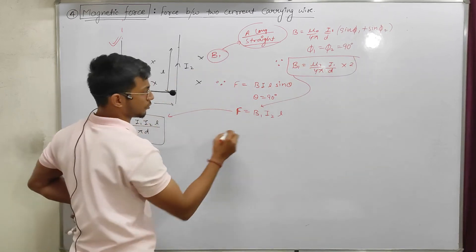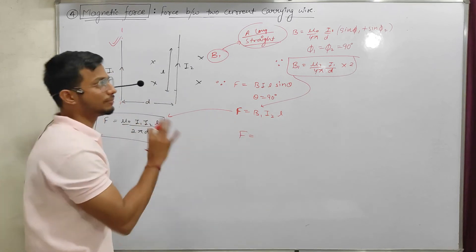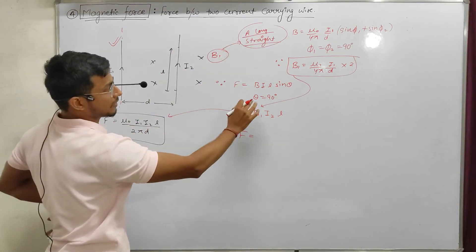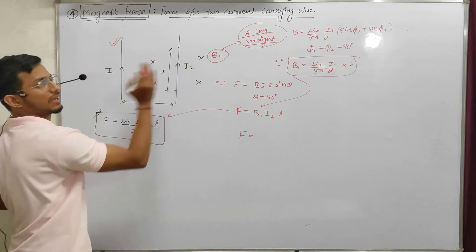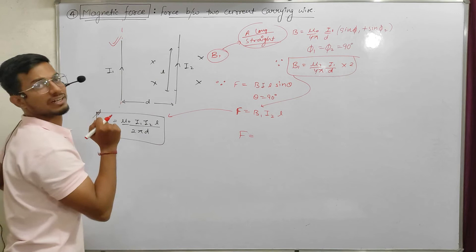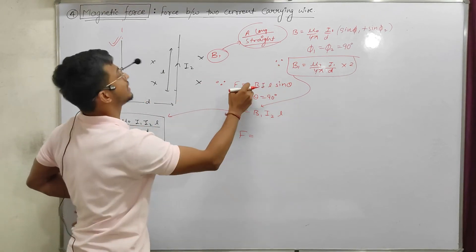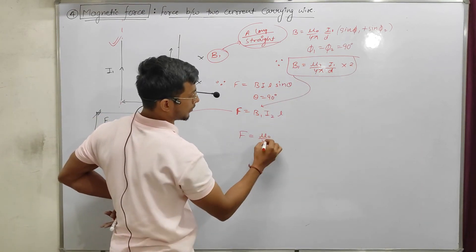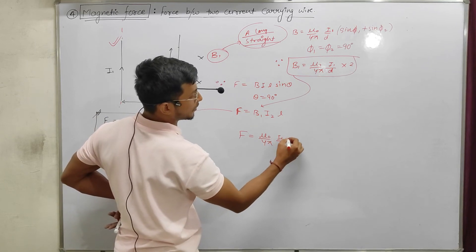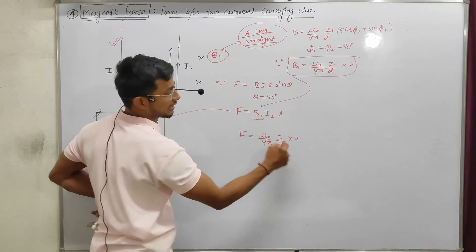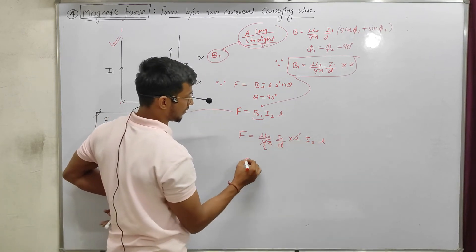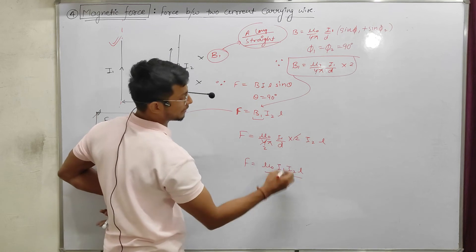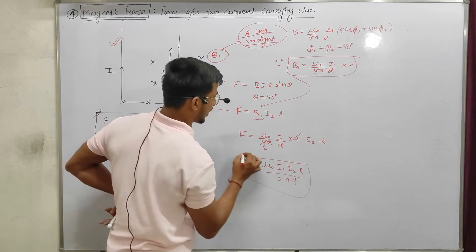Now put the value of B1 into the force formula. F = B1 · I2 · L = (μ₀/4π) · (I1/d) · 2 · I2 · L. Simplifying, the 4π and 2 give 2π, so the final formula is F = μ₀ · I1 · I2 · L / (2πd). This is the final formula we use every time, which I told you in the last video.